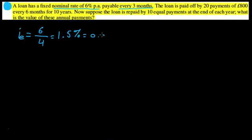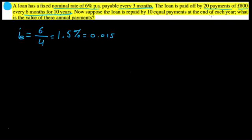That effective quarterly rate is also equal to 0.015. The loan is paid off by 20 payments of £800 every six months for 10 years. Now the question asks: suppose the loan is repaid by 10 equal payments at the end of each year — what is the value of these annual payments?